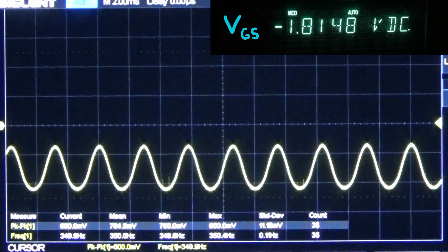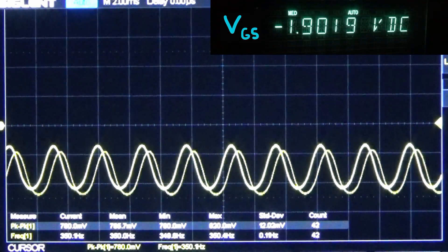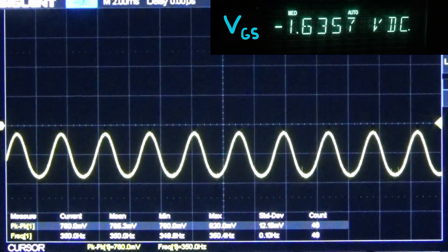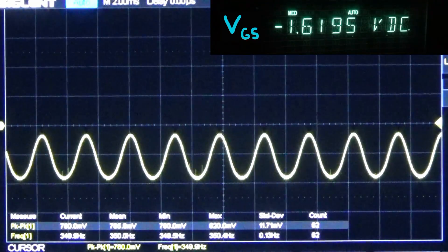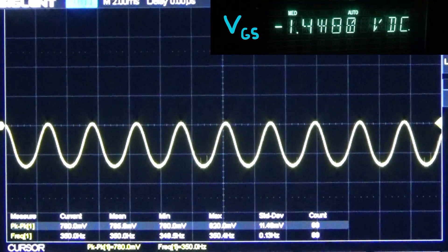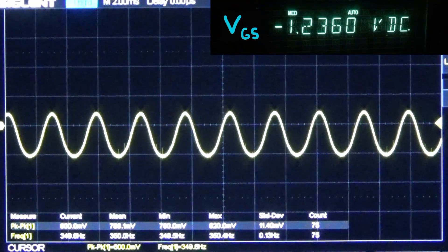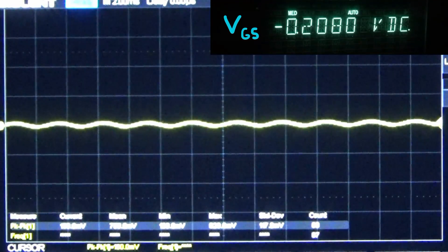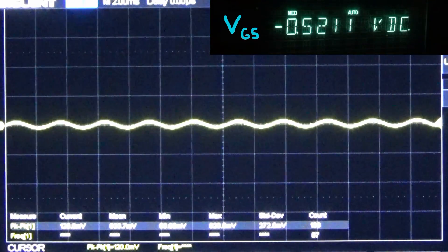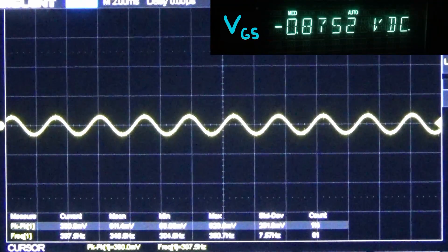We are in the JFET's saturation region. The transition point between the linear and saturation is called the pinch-off voltage. Here we're transitioning from the saturation to the linear region. The pinch-off voltage for this particular transistor is about minus 1 volt.